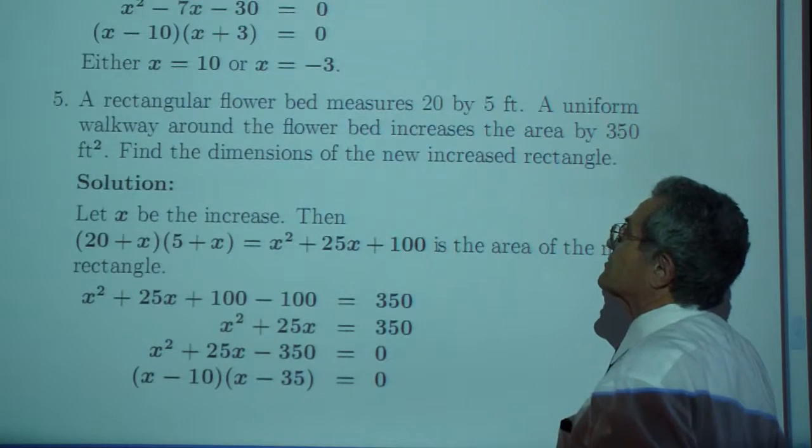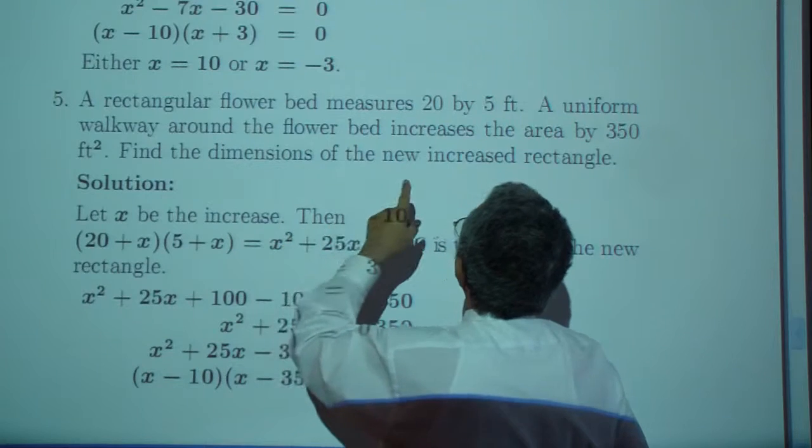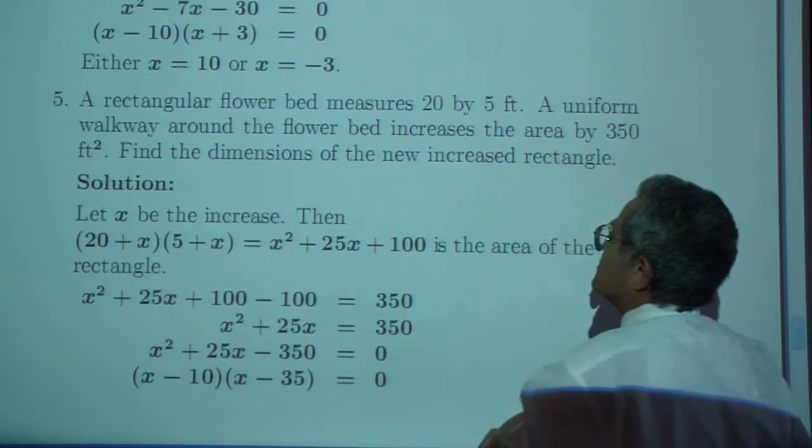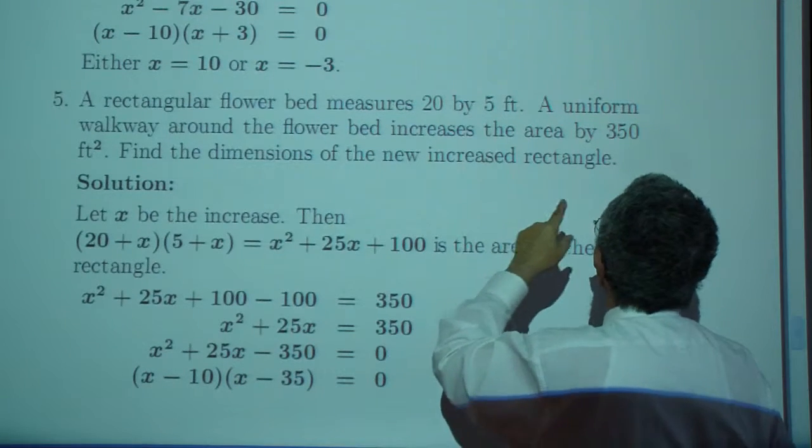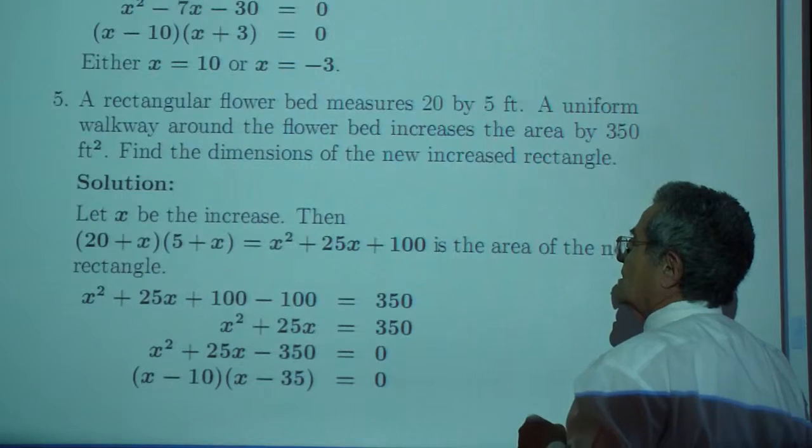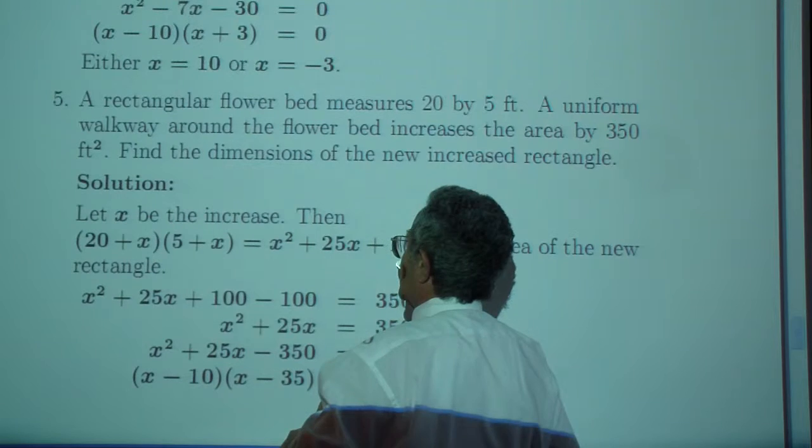And then we have a rectangular flower bed. The rectangular flower bed is measured 20 by five. Uniform walkway around the flower bed increases the area by 350 square feet. So we have 20 plus X, and we have 5 plus X.